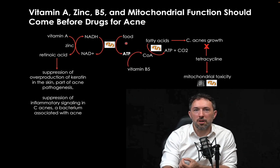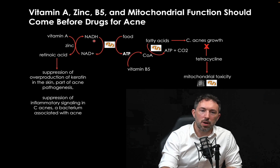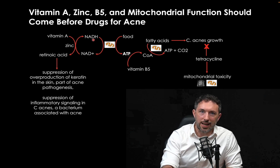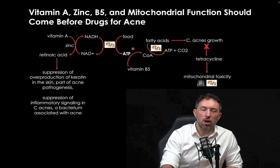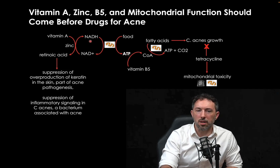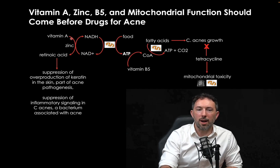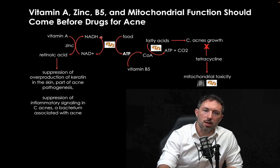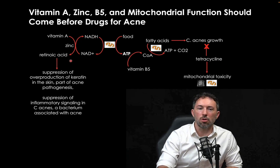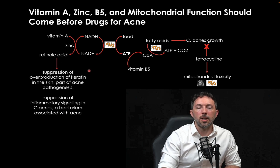When mitochondria convert food to ATP, as a byproduct they convert NADH to NAD+. You need NAD to activate vitamin A. If your mitochondria are not good at converting food to energy as ATP, they will not oxidize NADH to NAD. Whenever you activate vitamin A to retinoic acid, you use up the NAD and make NADH. So you need to constantly oxidize that using mitochondrial function in order to keep vitamin A activated.